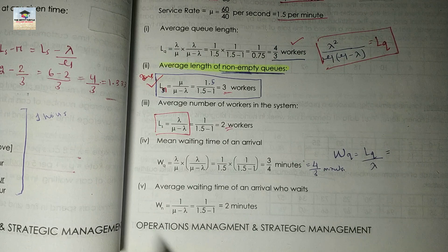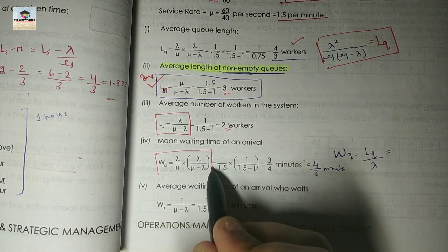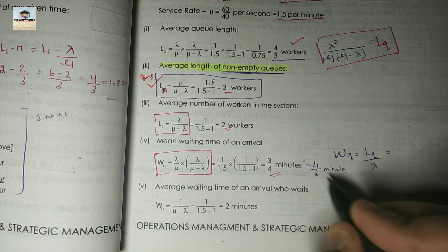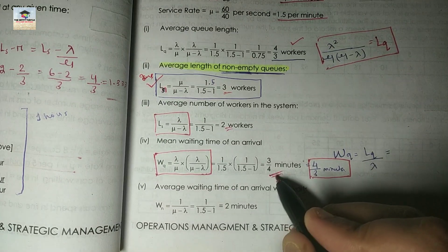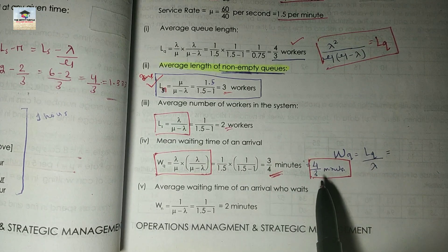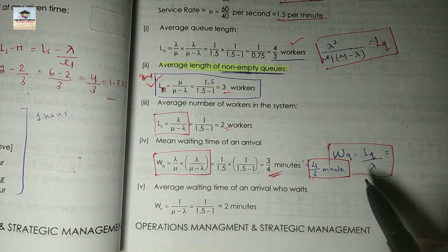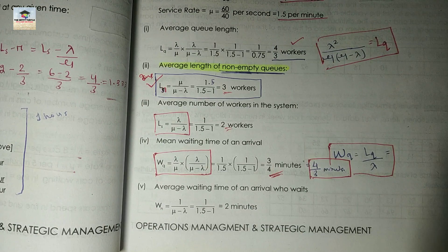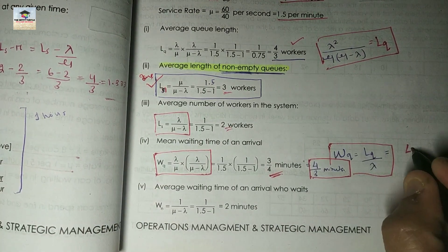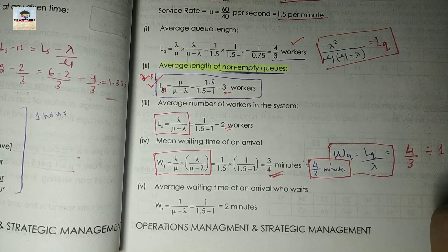The next question is the mean waiting time of an arrival, which is Wq. The formula is lambda squared divided by mu times (mu minus lambda), and the answer comes out as 4/3 minutes. Note that the answer given in the book is wrong. There is also a simpler formula: Wq equals Lq divided by lambda. Since Lq comes as 4/3 and lambda is 1, the result is 4/3 minutes.